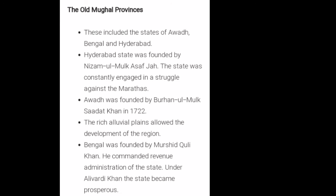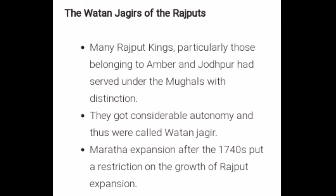Next, the Vatan Jagirs of Rajputs. Many Rajput kings, particularly those belonging to Amber and Jodhpur, had served under the Mughals with distinction. They got considerable autonomy and thus were called the Vatan Jagirdars. However, the Maratha expansion after the 1740s put a restriction on the growth of Rajput expansion.